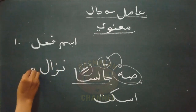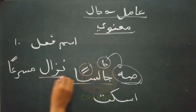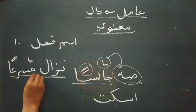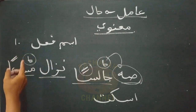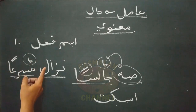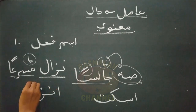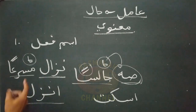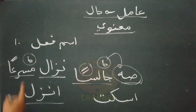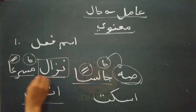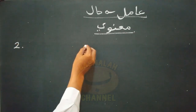Contoh lagi seperti lafat 'nazal musri'an' - turunlah dalam keadaan cepat. Lafat musri'an berkedudukan sebagai hal yang menjelaskan keadaan dari sohibul hal yang tersimpan pada lafat nazal. Takdiran makna daripada nazal adalah enzil - turunlah siapa kamu dalam keadaan cepat. Hal di sini wajib dibaca nasob dan yang menjadi amilnya adalah isim fi'il yaitu lafat nazal.